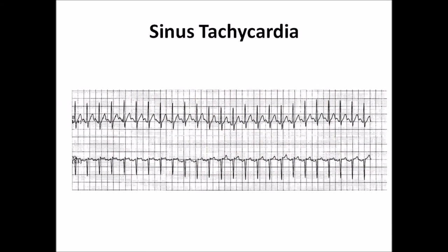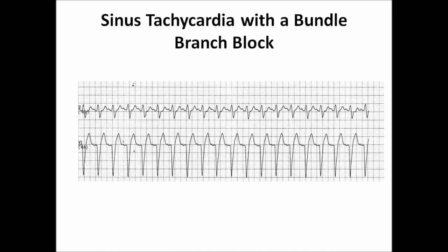This is sinus tachycardia. The P wave is upright in lead 2 followed by a narrow QRS complex. The P wave shows a QS pattern in V1, and the P wave is partly merged with the T wave at a rate of about 115 beats per minute. Another example shows the P wave seen right after the T wave at a rate of about 150 beats per minute. Sinus tachycardia with bundle branch block shows an upright P wave in lead 2 followed by a wide QRS, with the P wave partly merged with the T wave at about 115 beats per minute.